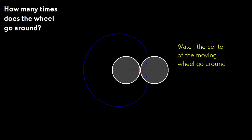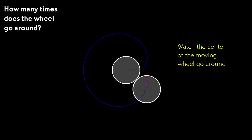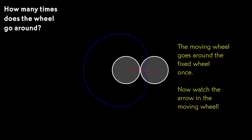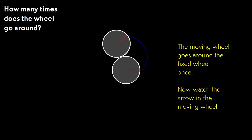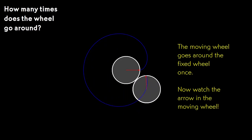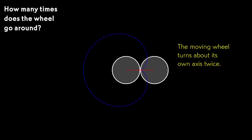Okay, are you ready? Watch just the center of the moving wheel as it goes around. It goes around exactly once. Now watch the arrow in the moving wheel to see how it turns about its own axis. It turns about its own axis twice.